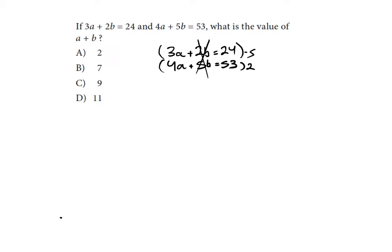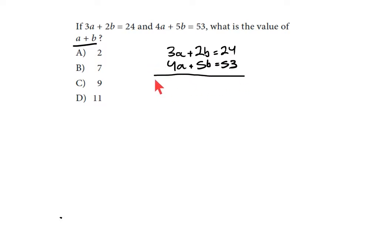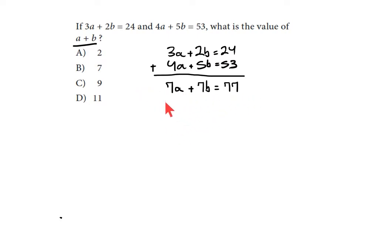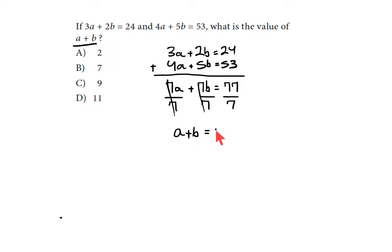What I want to show you is that we don't need to solve the entire system — we just need to know the sum. If you add these two equations together just as they are, without elimination, you get 3 plus 4a, which is 7a, and 2 plus 5b, which is 7b. And 24 plus 53 is 77. Since there's an equal sign, you can divide every term by 7 — multiply by one-seventh — and you get a plus b equals 11. Done.